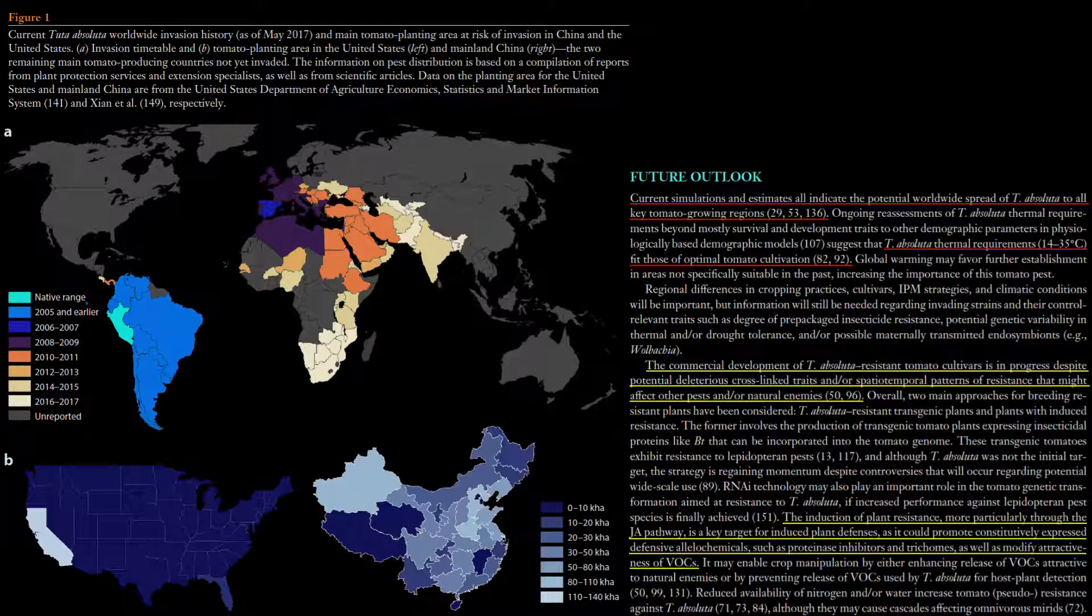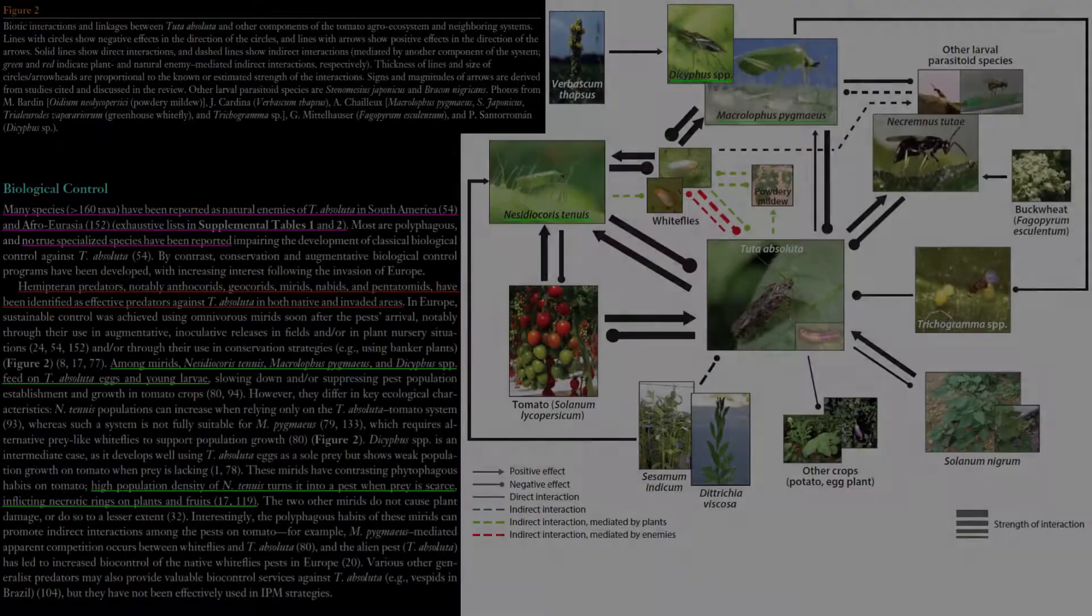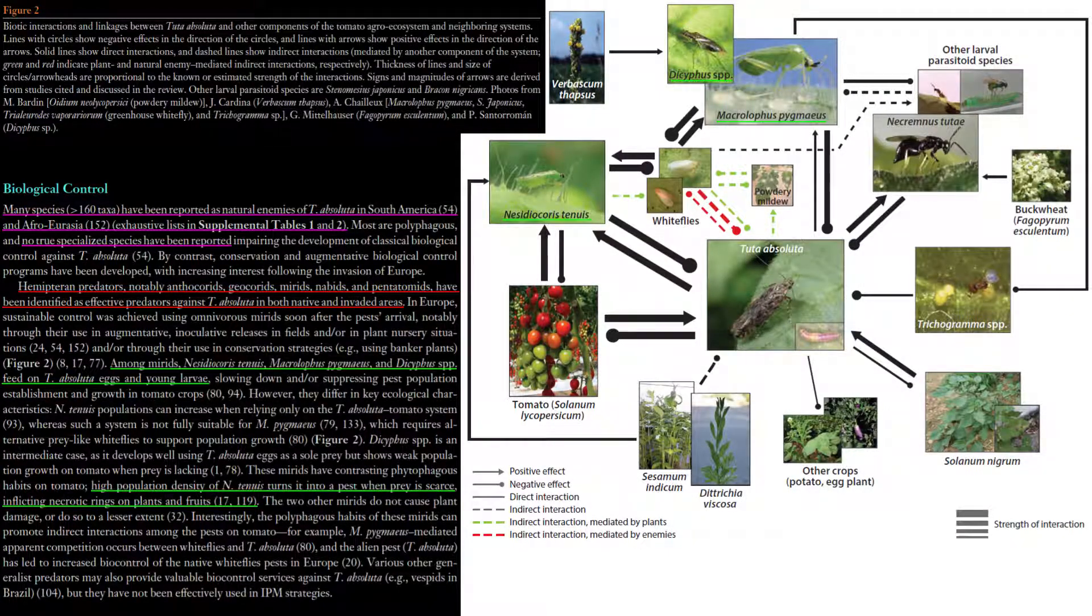Biocontrols such as the nematodes Steinernema feltiae, Steinernema carpocapsae, and Heterorhabditis bacteriophora have been observed to cause high larval mortality and low pupal mortality under laboratory conditions. Other biocontrols such as the bacteria Bacillus thuringiensis and various insects like Nabis pseudoferus, Nesidiocoris tenuis, Macrolophus pygmaeus, and Trichogramma wasps have management capability but lack the increased tenacity and efficacy specialist biocontrol agents often confer against their pests.